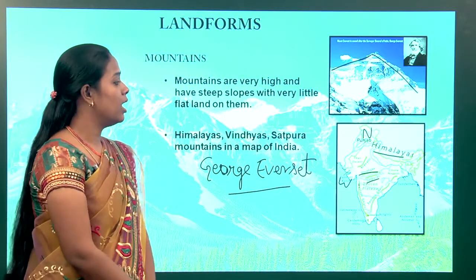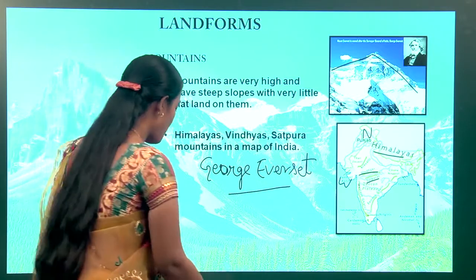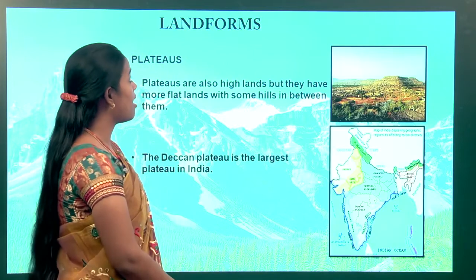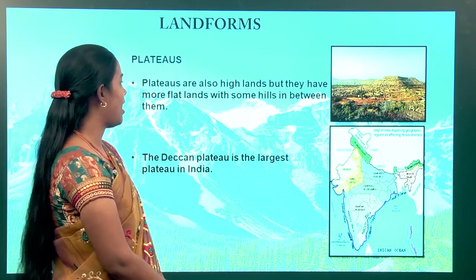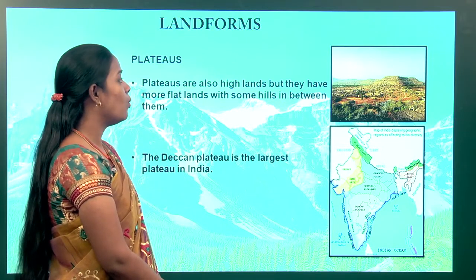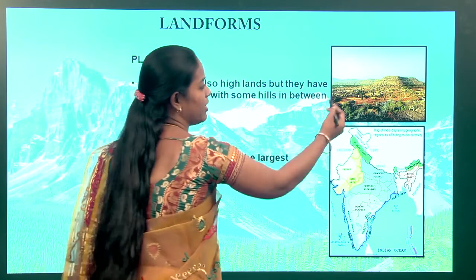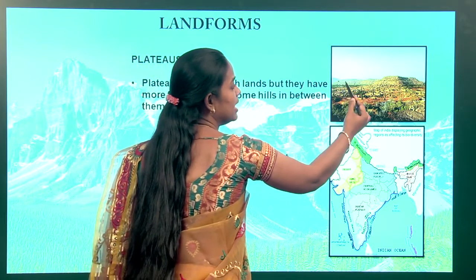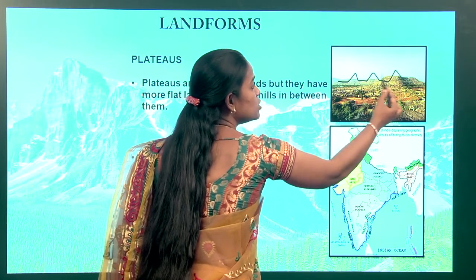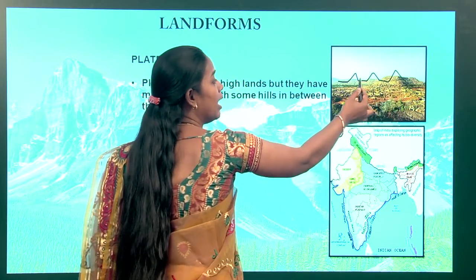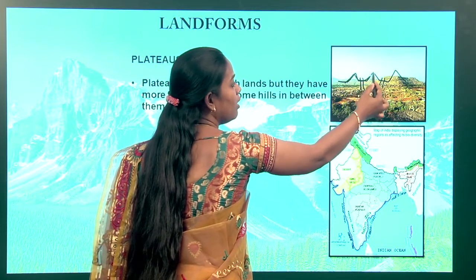Those are the main things about mountains. Now going to plateaus — what are plateaus? Plateaus are also highlands but they have more flat land with some hills in between them. As you can see in the picture of a plateau, the land is high, then you have flat land, then it is high again. Those flat high areas are called plateaus.